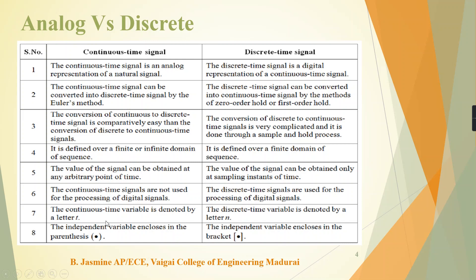The continuous time signal variable is denoted by the letter T. For example, X(T) is a continuous time signal representation. The discrete time variable is denoted by the letter N, and X(N) is a discrete time signal representation.